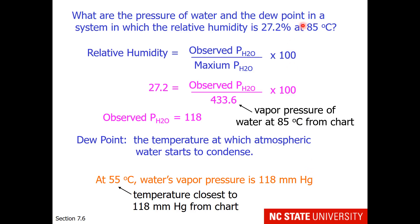So just to recap, on this mythical planet where the outdoor temperature is 85 degrees Celsius and the relative humidity is 27.2%, maximum vapor pressure of water at 85 is 433.6. So 27.2% of that is 118, and that means the temperature needs to drop from 85 to 55 in order for rain to start. Maybe you've heard in weather forecasts that a low dew point means that the relative humidity is low.